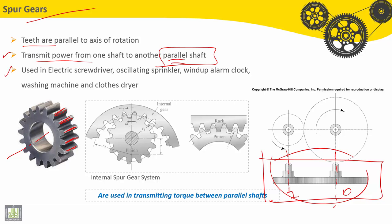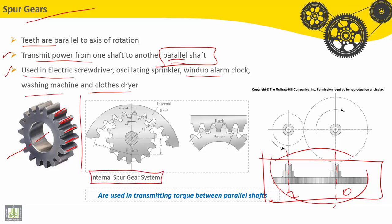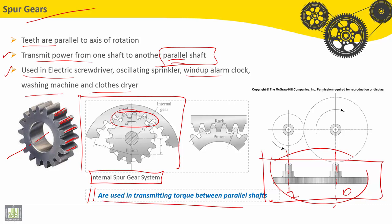Third feature: spur gears are used in electrical screwdrivers, oscillating sprinklers, wind-up alarm clocks, washing machines, and clothes dryers. We can also find internal spur gear systems, as shown in this figure, where the gearing is internal. They are used in transmitting torque between parallel shafts.